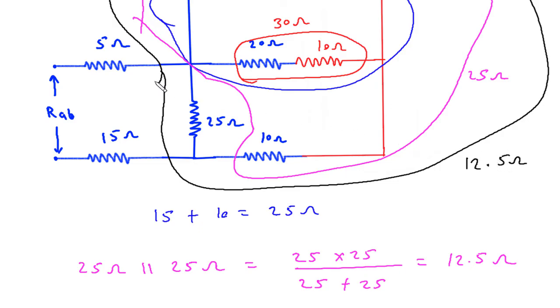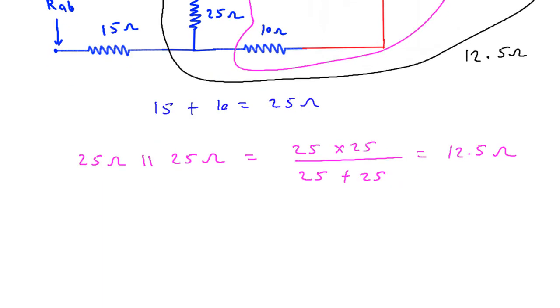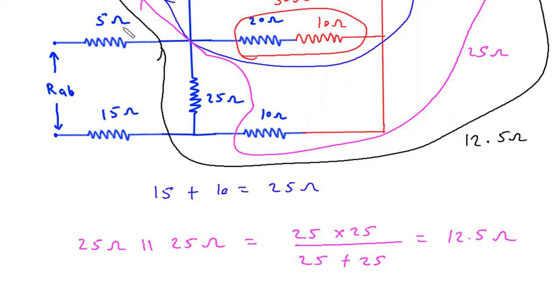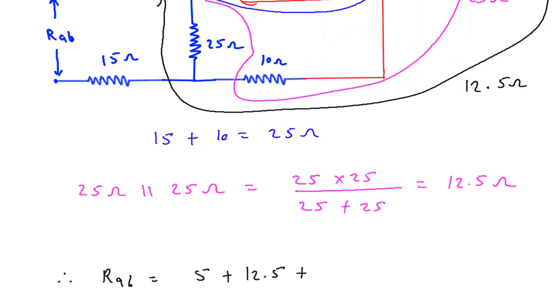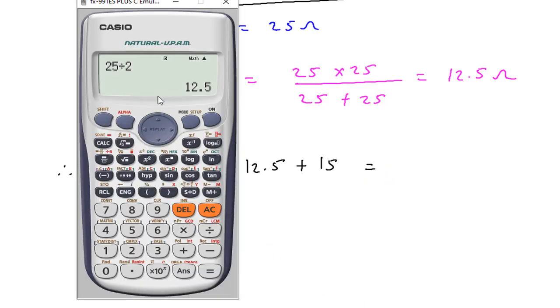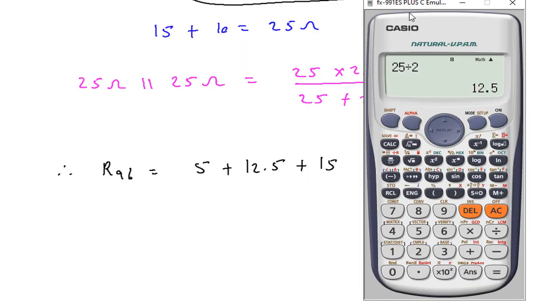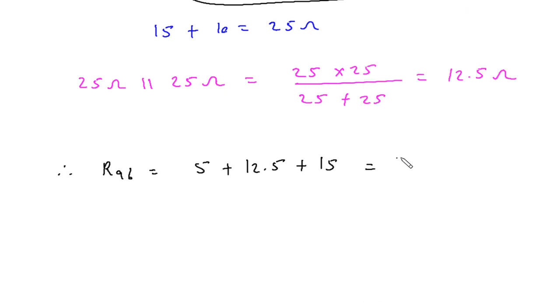Now this 12.5 ohm is in series with 5 ohm and 15 ohm, so our final RAB is equal to 5 plus 12.5 plus 15, which equals 32.5 ohm. Therefore, RAB is equal to 32.5 ohm.